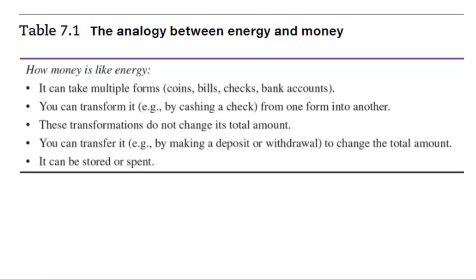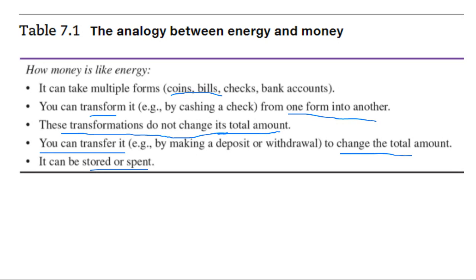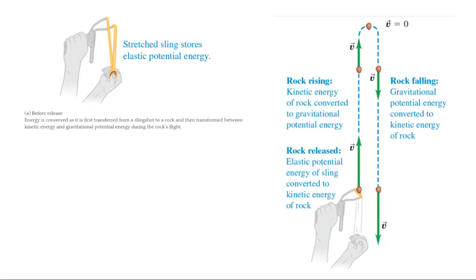The author makes an analogy between energy and money: money can take multiple forms, you can transform it from one form to another — potential to kinetic and back — and these transformations don't change the total amount. You can also transfer energy, store it, or spend it.